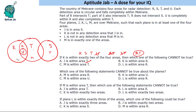Since J and K cannot share a radar area, option A (J is within area T) is false. Next question: which of the following statements cannot be true about the planes? The first statement says M is within area R — can M be here? J is within S, K should not intersect with J so we can put K elsewhere. K and M have no restriction against being together, so M in R looks possible.